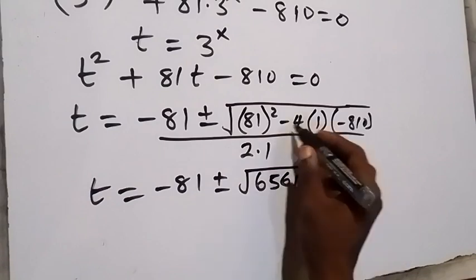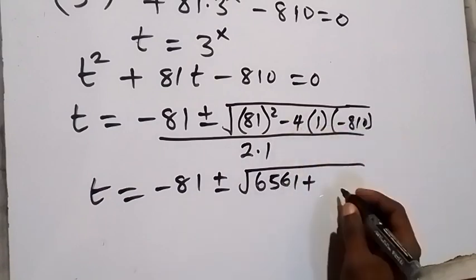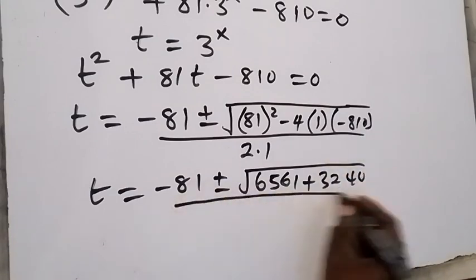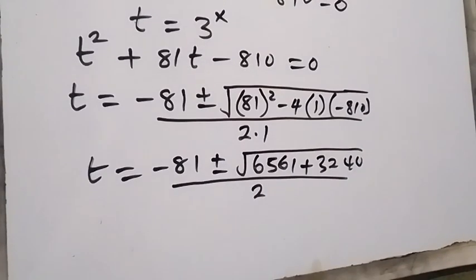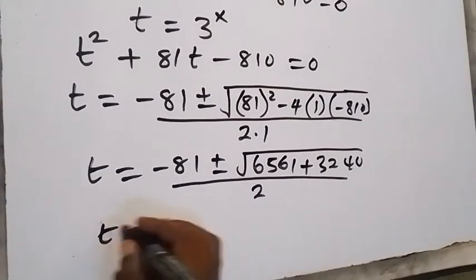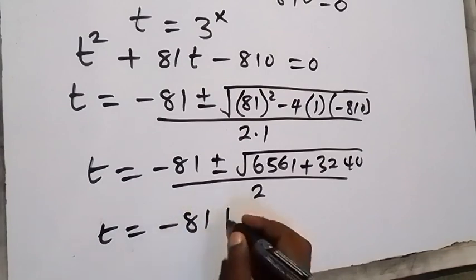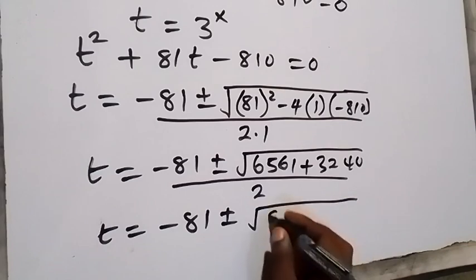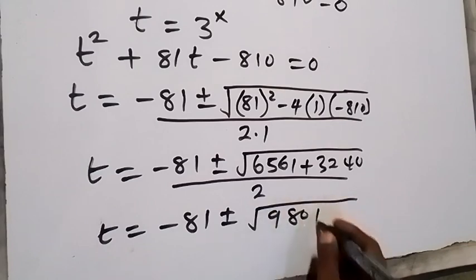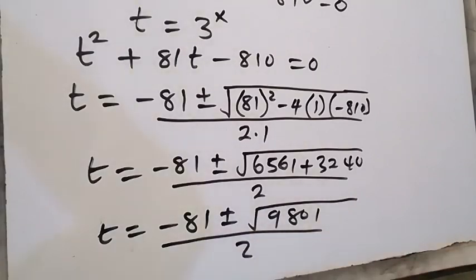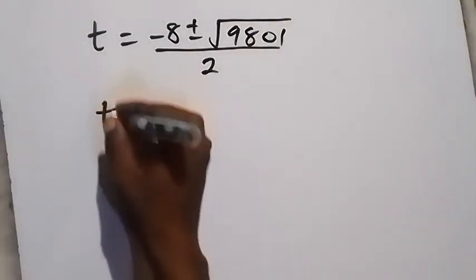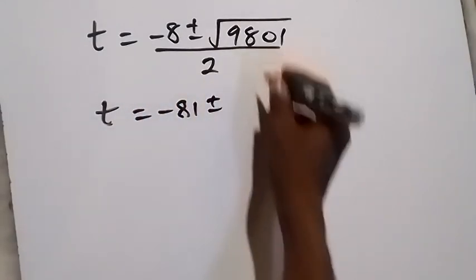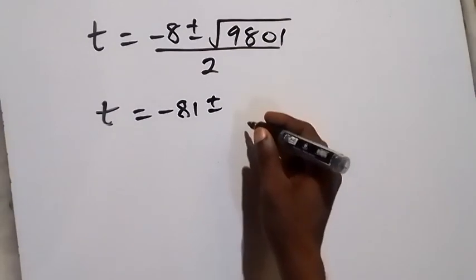Then minus times minus becomes plus, and 4 times 810 gives 3240. Divided by 2 times 1, that's 2. Adding 6561 and 3240, we get t equals minus 81 plus or minus square root of 9801, divided by 2.